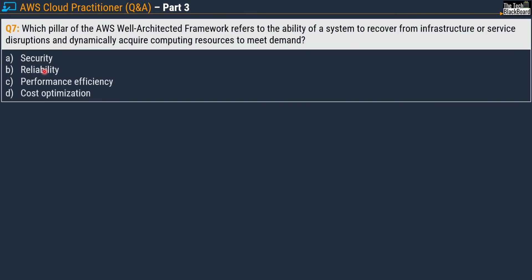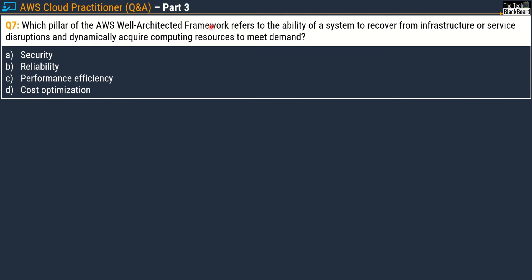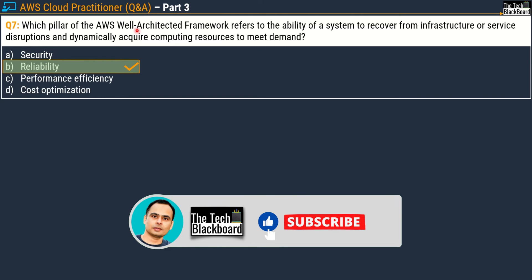Question number seven: which pillar of the AWS Well-Architected Framework refers to the ability of a system to recover from infrastructure or service disruption and dynamically acquire computing resources to meet demand? Options are: A) security, B) reliability, C) performance efficiency, D) cost optimization. The correct answer is Option B, reliability. I will share documentation on the AWS Well-Architected Framework with questions 15 to 20 in coming parts of this series, which will help you understand all six pillars. Please subscribe to the channel so you get timely notifications.